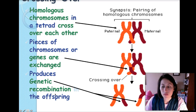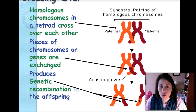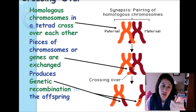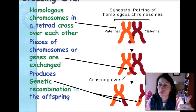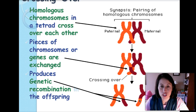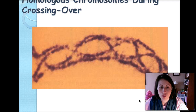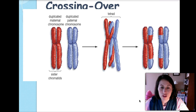An important point: where chromosomes touch during crossing over, those are the same types of genes. You can't switch a gene for hitchhiker's thumb with a gene for eye color — both have to be hitchhiker's thumb genes that switch, otherwise you could get mutations. Here's an actual picture of homologous chromosomes crossing over during prophase one.